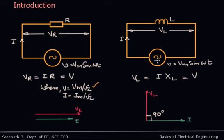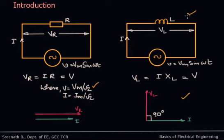In a purely inductive circuit, the voltage across the inductor leads the current through it by an angle of 90 degrees, or the current lags behind the voltage by 90 degrees. This happens because the current cannot instantaneously change in the case of an inductor — even though voltage is applied, the current increases to its value only after some time lag.